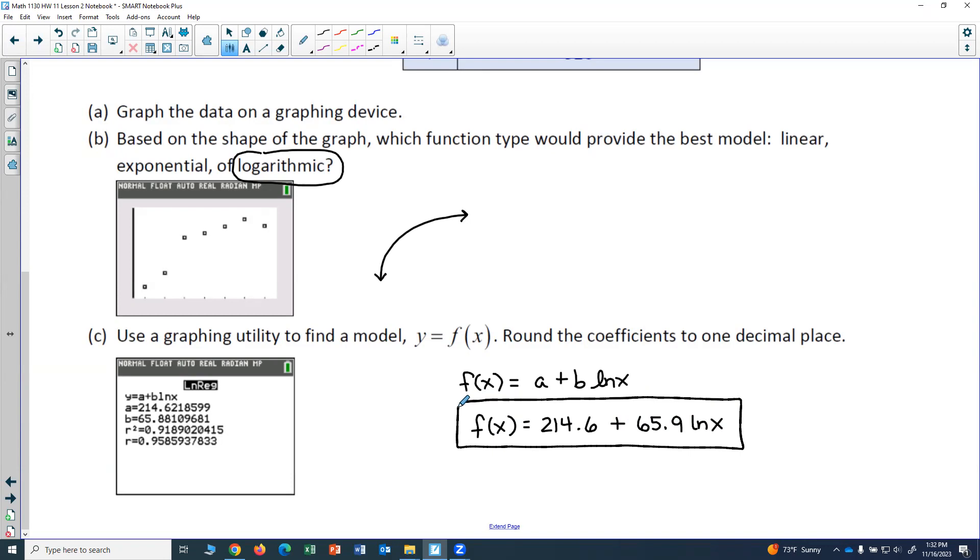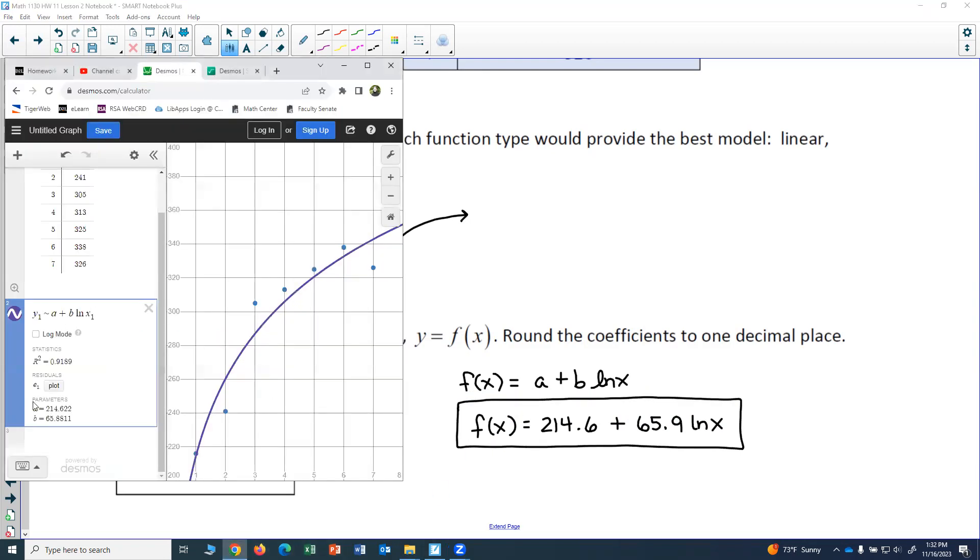There's my model. And you can double check in your Desmos calculator that's what we got: 214.6 plus 65.9 natural log of x.